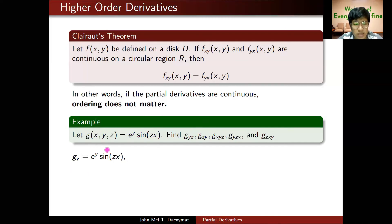Then g sub yz is the derivative with respect to z. In this case, e to the y is constant, so e to the y times cos(zx) times the derivative of zx. Since I'm differentiating with respect to z, that's just x. This is my g sub yz. For g sub zy, no need to compute—I still get the same thing by Clairaut's theorem. If you don't believe me, you can compute it on your own. Of course, you should get the same thing.